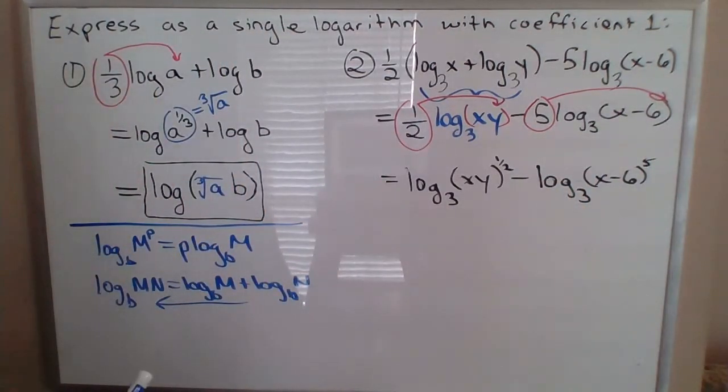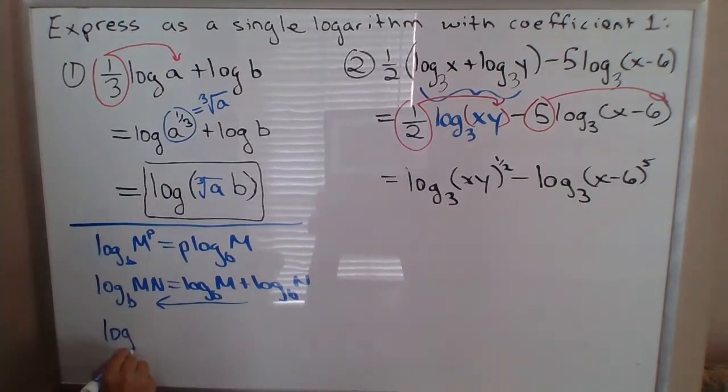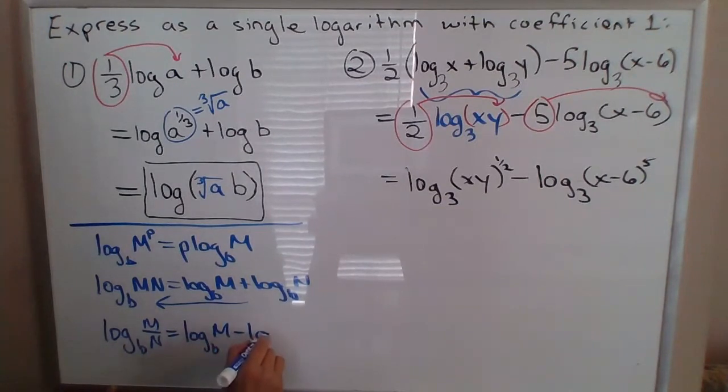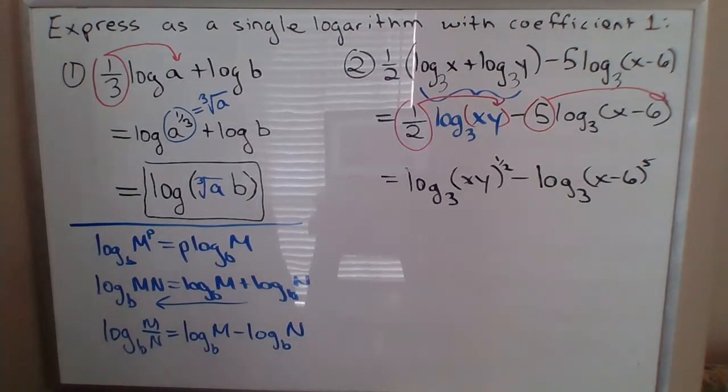So there's the third big property of exponents that you study in this section, is that if you have log base b of m over n, that's equal to log base b of m minus log base b of n. Log of the top minus log of the bottom.